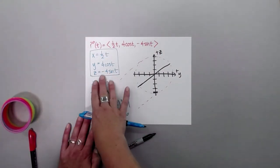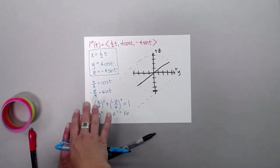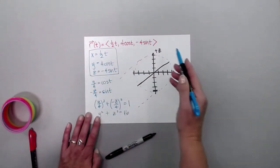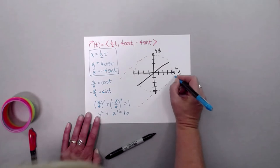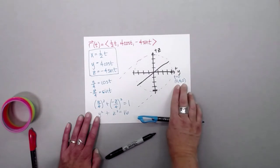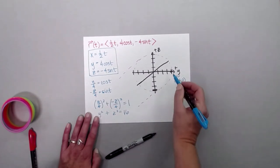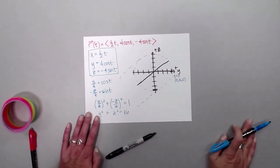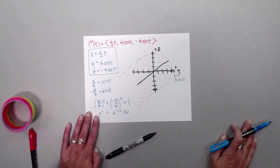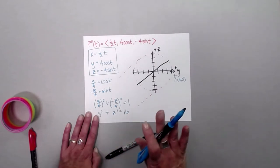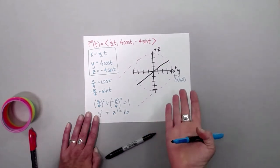When t equals 0, the x and z coordinates are 0, and y is 4. So at t = 0 we have the point (0, 4, 0). These trig functions make one cycle through all their values in an interval of 2π — the period of both is 2π. I'd like to plot a point at t = 2π and at some places in between, specifically when the sine and cosine functions hit their maximum and minimum values.